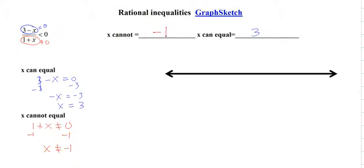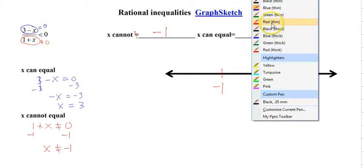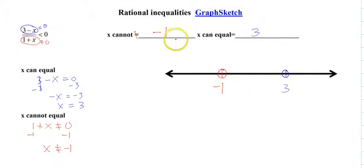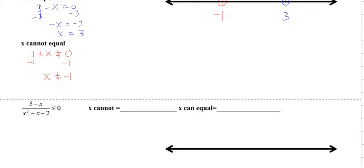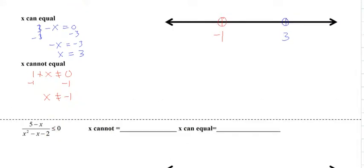So if we place these on the number line, there's negative 1 and there's 3. We know our value could actually be 3, however it's not equal to 0, so we still put an open dot. And at negative 1 we also put an open dot. The not-equal-to will always be open circles. If it is equal to, then you put a closed dot.